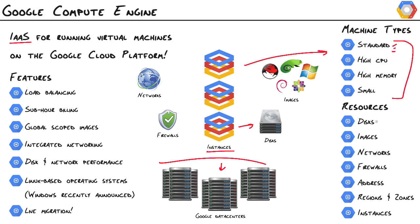We have disks known as persistent disks. Anytime you spin up an instance, we need a disk that contains an operating system and a root file system, and then we can attach more persistent disks that contain our data. Images provide everything that our instance needs to run: a bootloader, an operating system, and a root file system. At the free level, we have Debian and CentOS. At the premium level, we have Red Hat Enterprise Linux, SUSE, and Windows Server 2008 R2. You can also create your own custom images from these flavors.